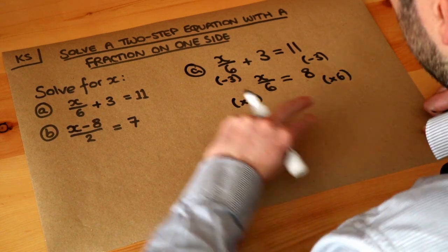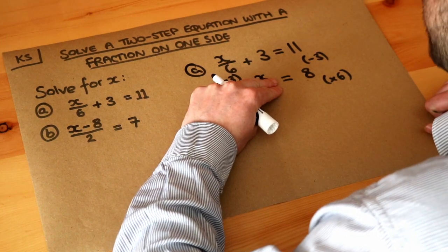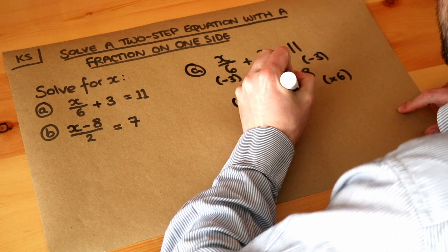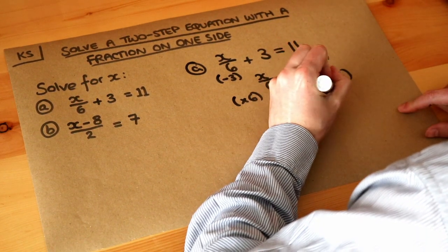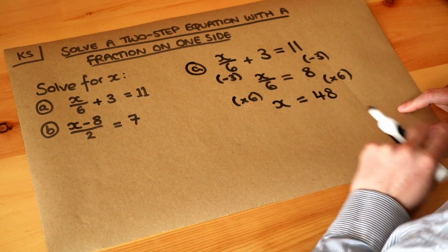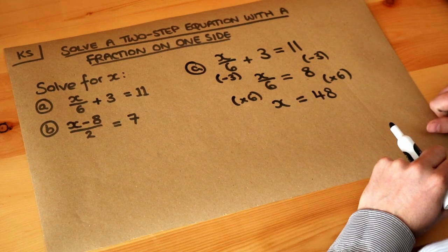So the multiply by 6 on the left-hand side gets rid of that over 6, and we're just left with x. And then 8 times 6 on the right-hand side is 48. And that's the final answer. We've got x on its own and we know that x is equal to 48.